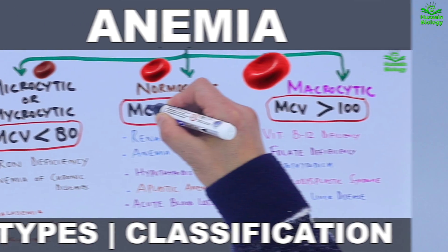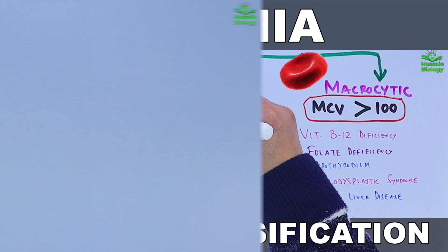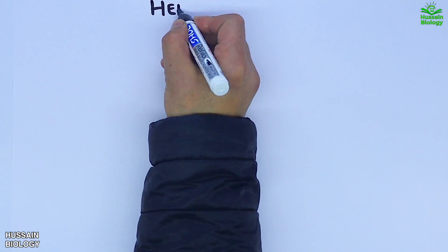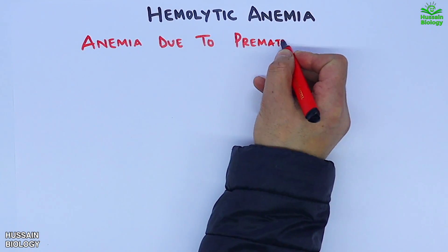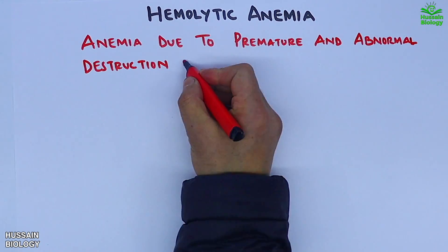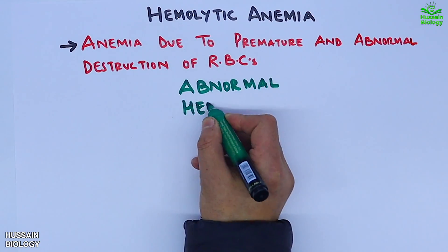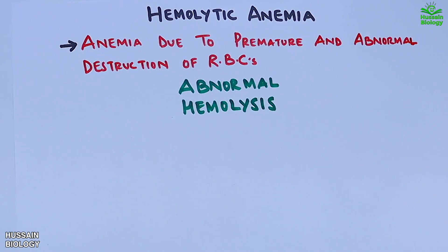In the previous video we discussed about anemia in general. Now in this video we will be discussing about hemolytic anemia. This anemia is due to premature and abnormal destruction of RBCs, what we call as abnormal hemolysis.